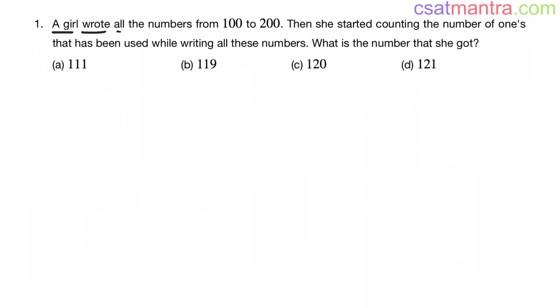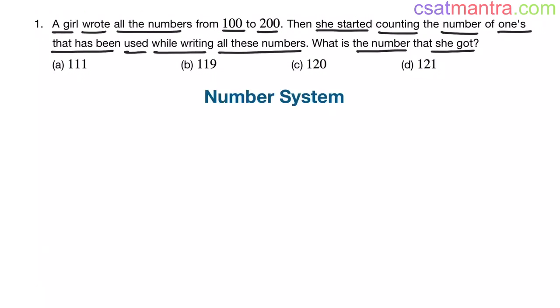A girl wrote all the numbers from 100 to 200. Then she started counting the number of 1s that has been used while writing all these numbers. What is the number she got? This question is from number system chapter. You can expect similar questions in CSAT. UPSC has asked a question based on counting every year.